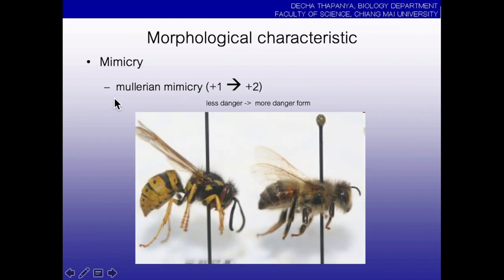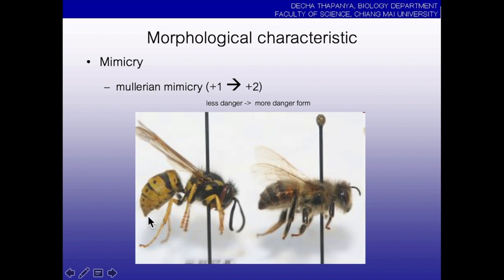The next type is Mullerian mimicry, named after the scientist Muller. Mullerian mimicry is when a less dangerous animal copies a more dangerous one. Like a bee copying a wasp — in the world of insects, the wasp is the most harmful Hymenoptera because it can bite, sting, and sting many times. Bees can sting only once and then die. Some bees copy wasps to look more dangerous — that is Mullerian mimicry.